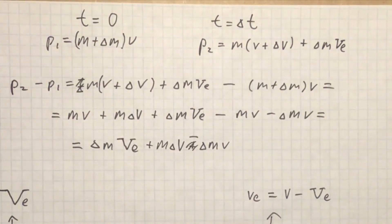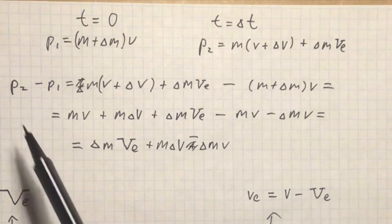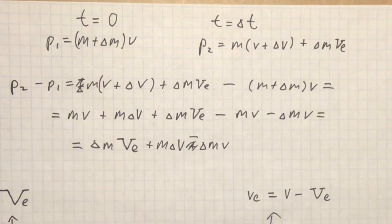We want to use Newton's second law of motion, which says that a body's rate of change in momentum is equal to the sum of forces acting on it. So, we want to calculate the difference in momentum. As we can see, we obtain that the difference in momentum is equal to delta m v_e plus m delta v minus delta m v.